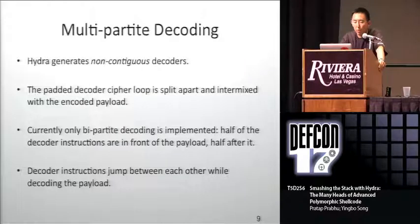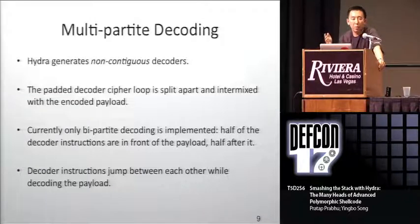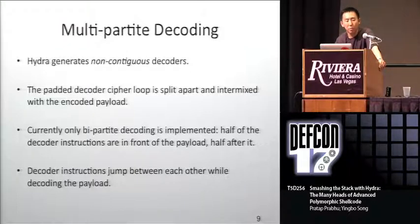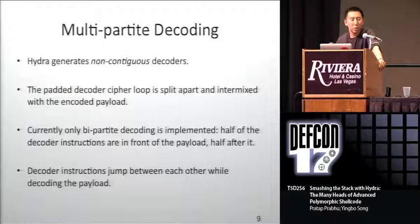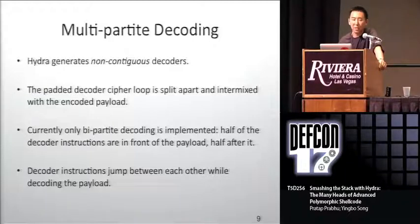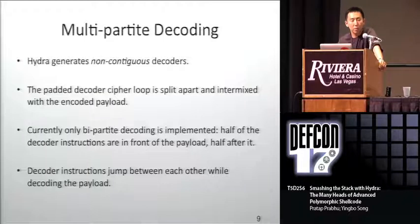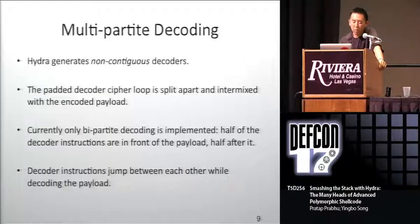Multipartite decoding: Hydra generates non-contiguous decoders. In a traditional polymorphic engine, you have a no-op sled, a decoder, and a payload. The decoder dynamically reverses whatever encoding you used. But typically decoders are contiguous — one block of code — which can be detected by IDS sensors. In Hydra, we break up the decoder instructions and scatter them into the payload itself. The instructions jump between each other while decoding. Currently, bi-partite decoding is implemented — half the decoder up front, half in the back, with the payload in between, jumping between each other. True multi-partite decoding is planned for the future.